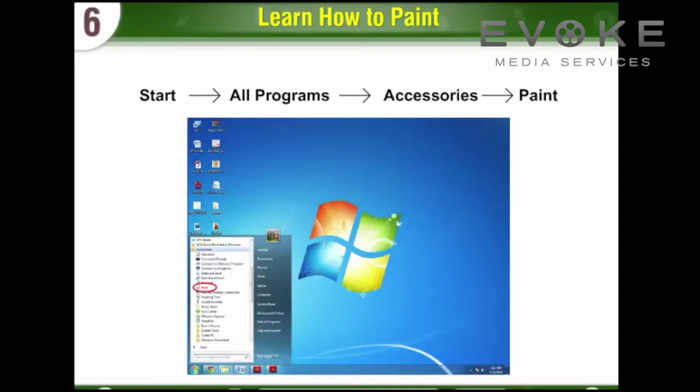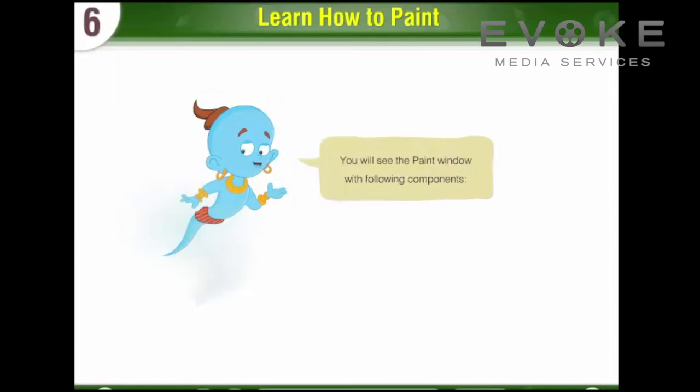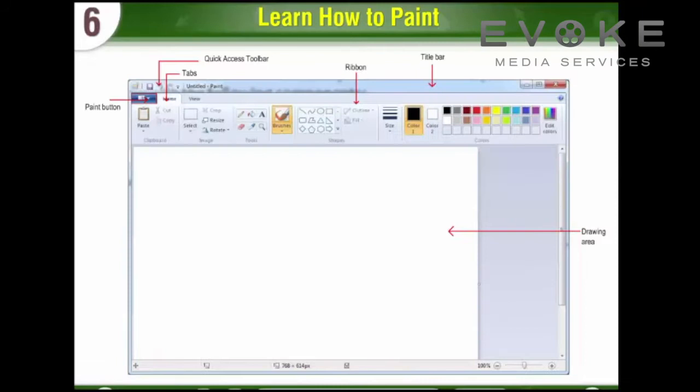Components of the Paint Window: You will see the Paint Window with the following components — Paint Button, Quick Access Toolbar, Tabs, Ribbon, Title Bar, and Drawing Area.